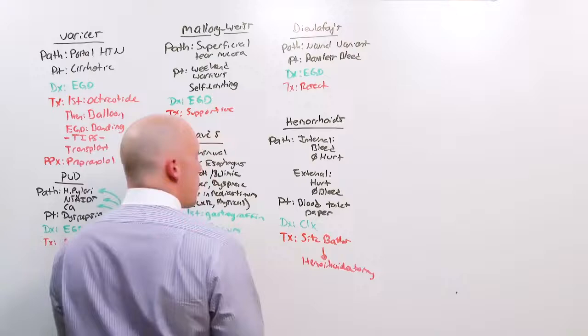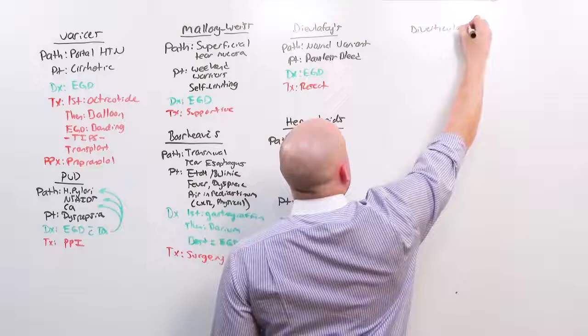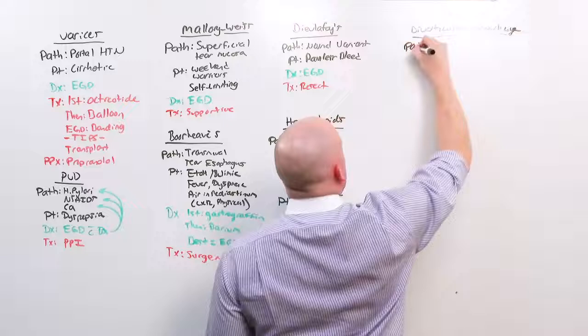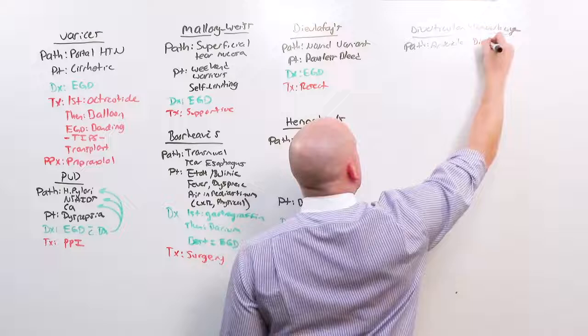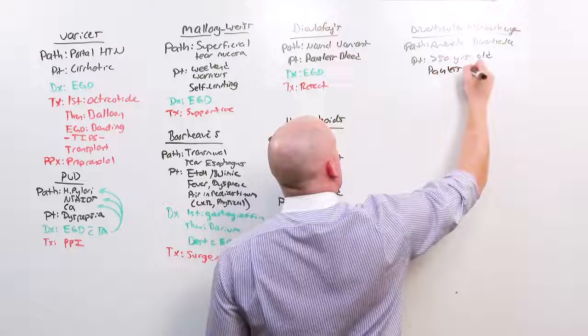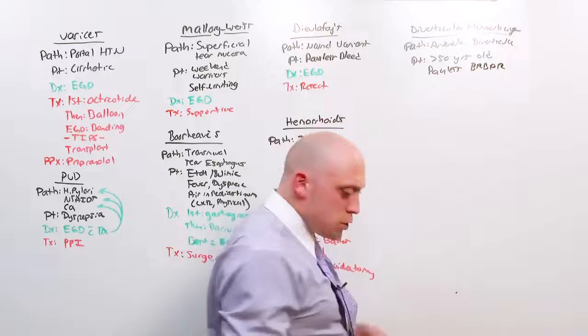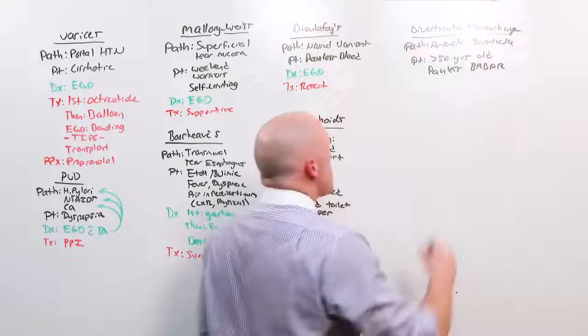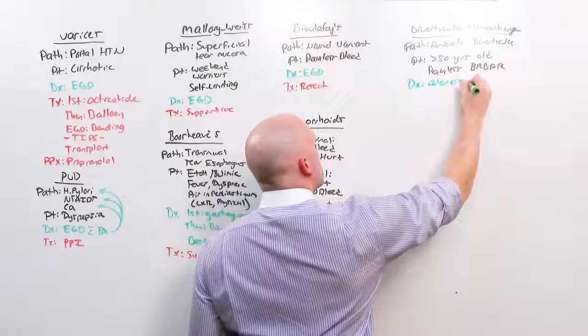We have a lecture on diverticular disease. A diverticular hemorrhage is particularly common. The pathology comes from an arteriole in the dome of a diverticulum. And the patients who get diverticula are going to be those who are over 50 years old with western diets. The patient will present with a painless, bright red blood per rectum. This is usually self-limiting, even though there's a high risk of re-bleed. The diagnosis is made once the bleeding stops by colonoscopy. You don't see the bleed, you see the diverticula. And the treatment would be resection of the diverticulum, hemicolectomy.